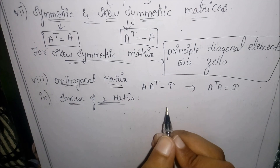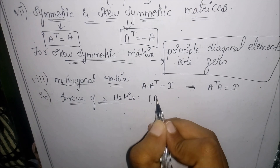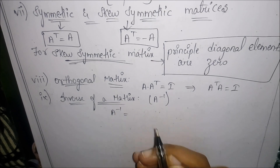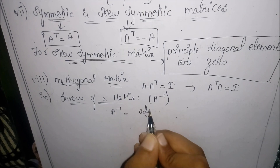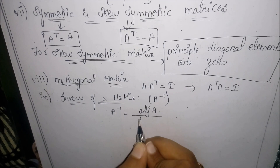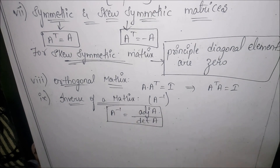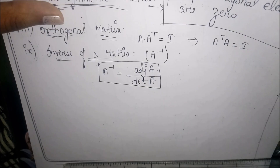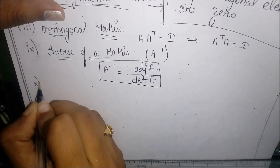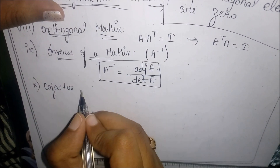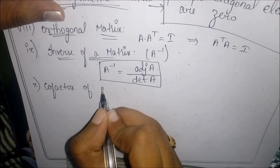The next topic is the inverse of a matrix. Consider a square matrix A — its inverse is obtained by the formula: adjoint of A divided by the determinant of A, that is A inverse equals adj(A) divided by det(A).